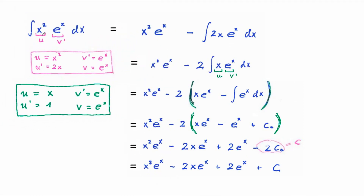Here is another example. We will integrate the function x squared times e to the x, and we will use integration by parts 2 times. First we let u equal x squared and v prime equal e to the x. Then u prime equals 2x and v equals e to the x. So the given integral is equal to x squared times e to the x.